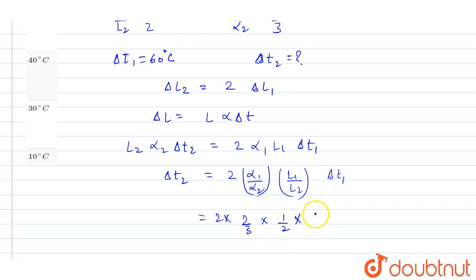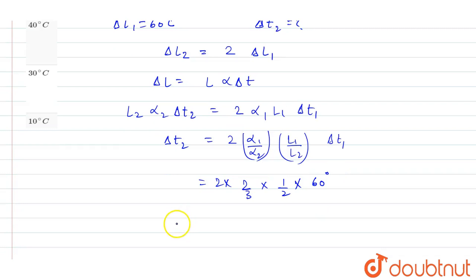And del T1 is 60 degree Celsius. So here we can solve this. 2 and 2 cancel out, and 60 by 3 will be 20, and 20 into 2 is 40 degree Celsius. So our final answer is here.